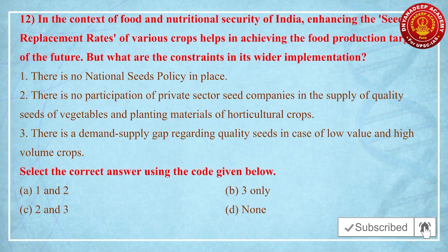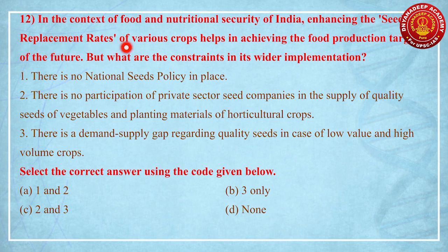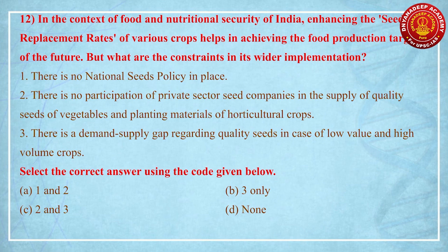Second question, that is question number 12: in the context of food and nutritional security of India, enhancing the seed replacement rates of various crops helps in achieving food production targets of the future. But what are the constraints in its wider implementation? These kinds of questions are very rare and are being asked from government reports, economic surveys, or reports given by particular government organizations, so you have to tackle them very carefully.